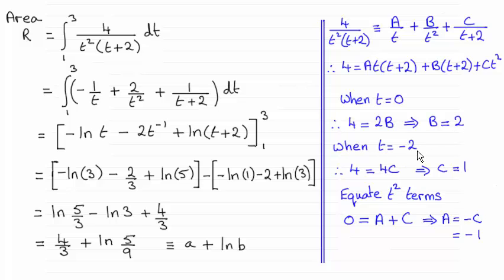Similarly, when t is minus 2, that takes out this term and this term and allows us to work out what C is, which turns out to be 1.